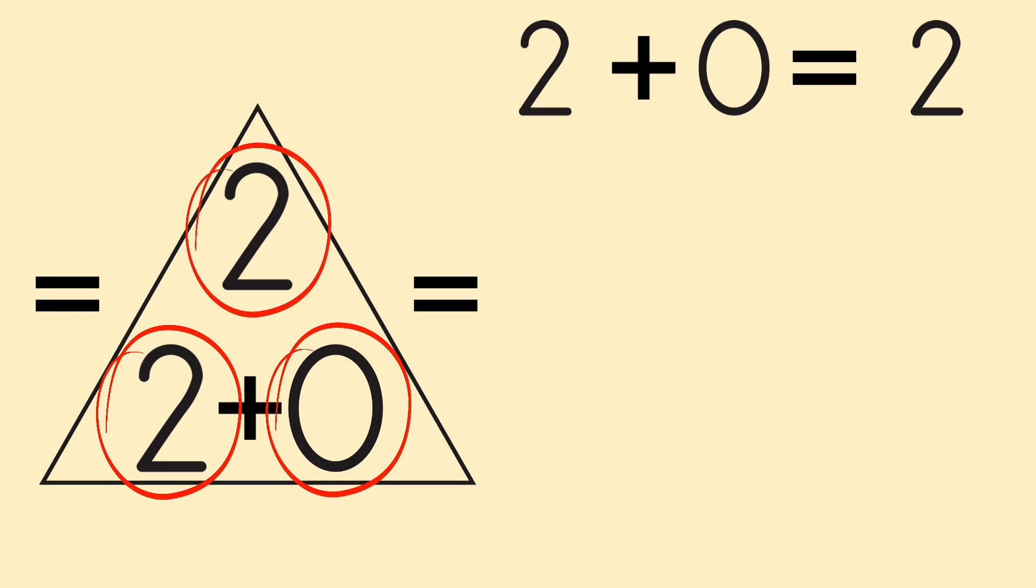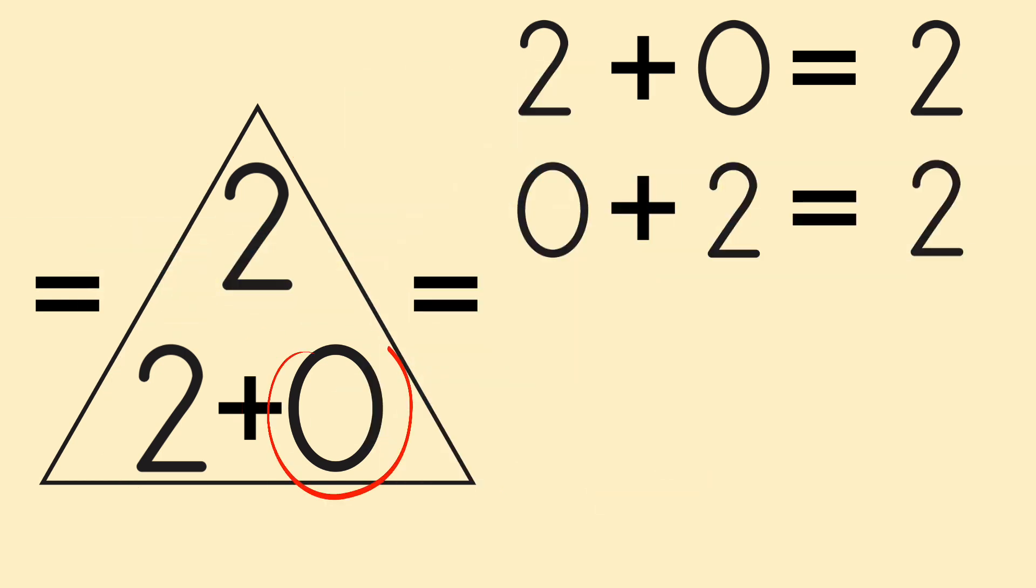Then, she started at the other side and did the same thing. 0 plus 2 equals 2. Emily now had two addition facts.